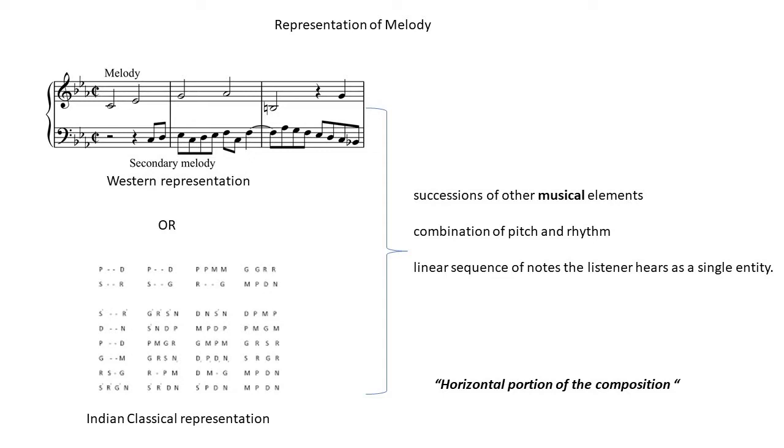Basically, we can view it as a horizontal portion of the composition when the notes are played in a linear or sequential manner. In Western music, we depict it as staff notation. At this stage, don't worry about the notation. We will get into the details in a later topic. In Indian classical music, they are depicted through what is called swaras.